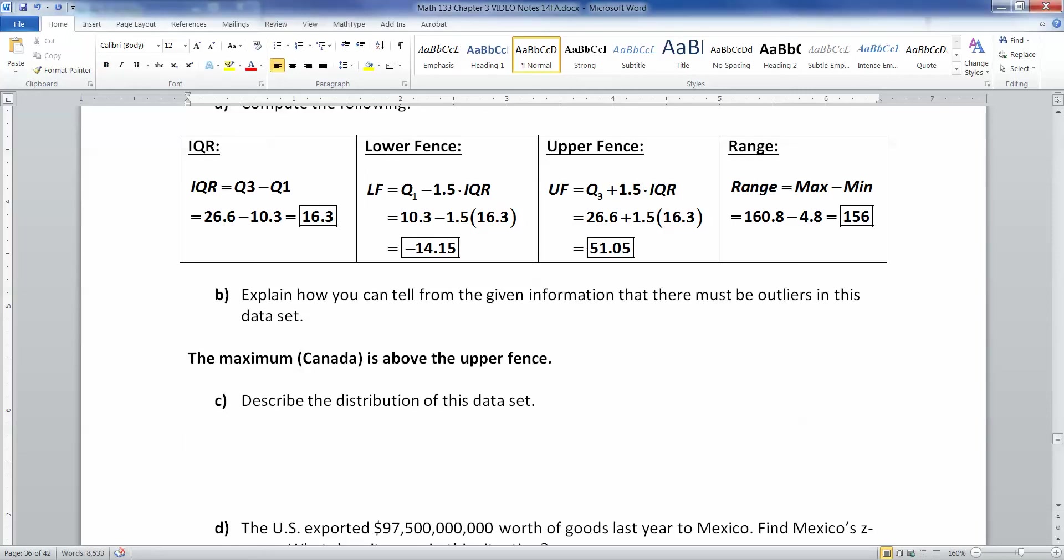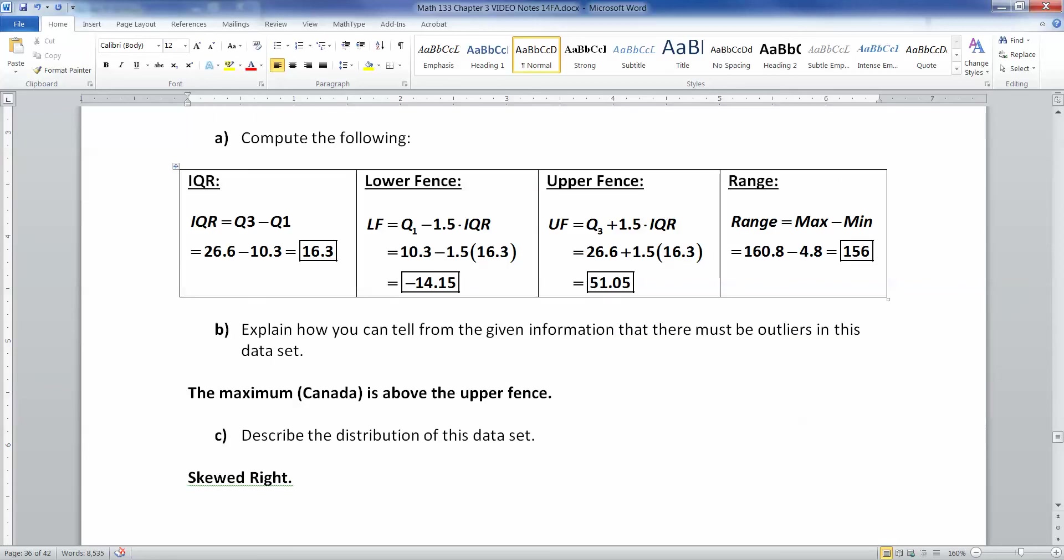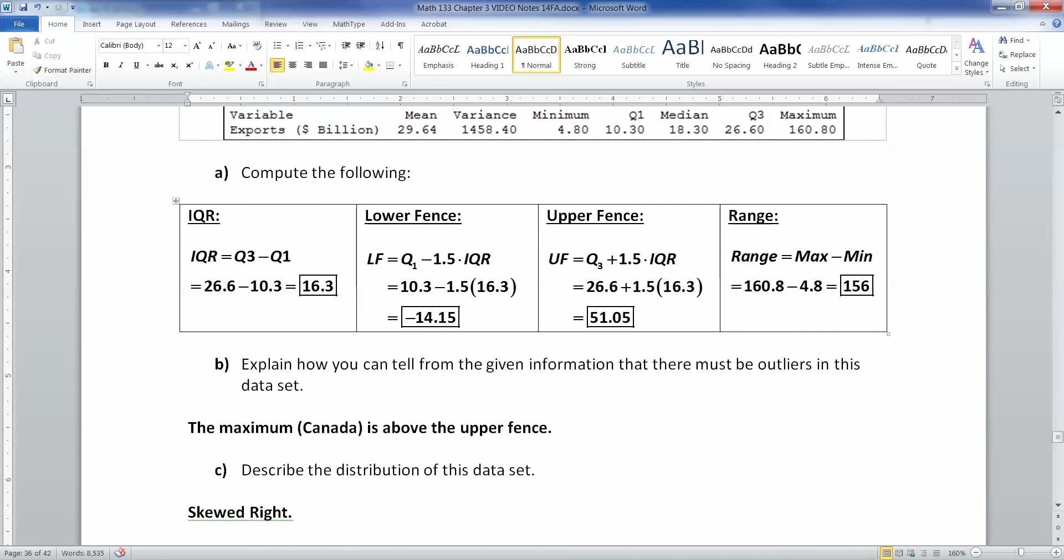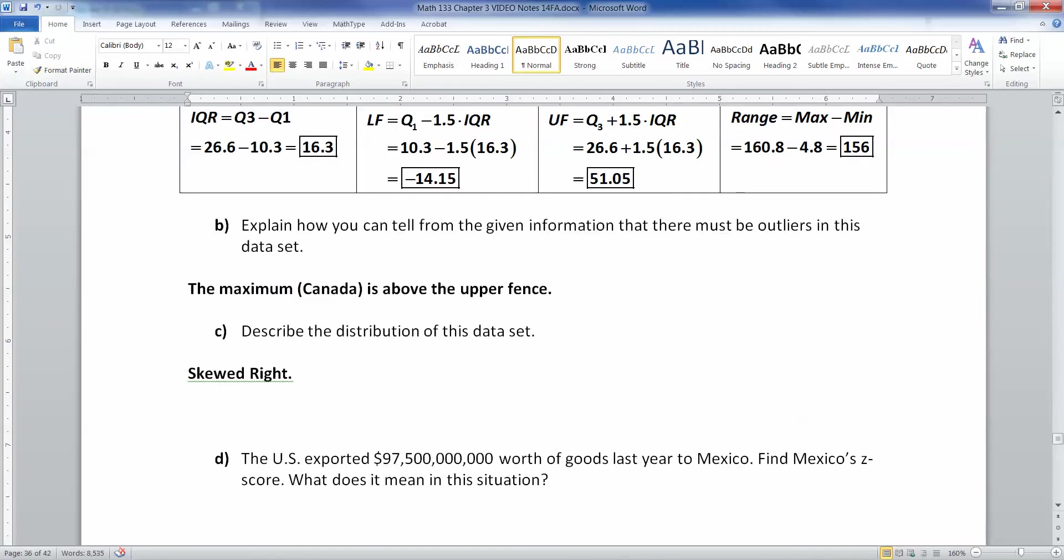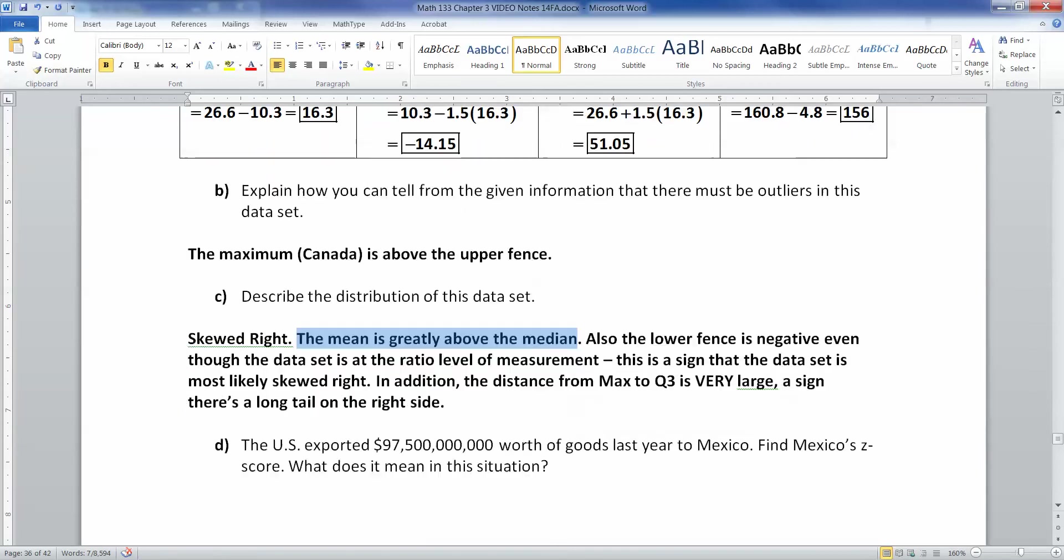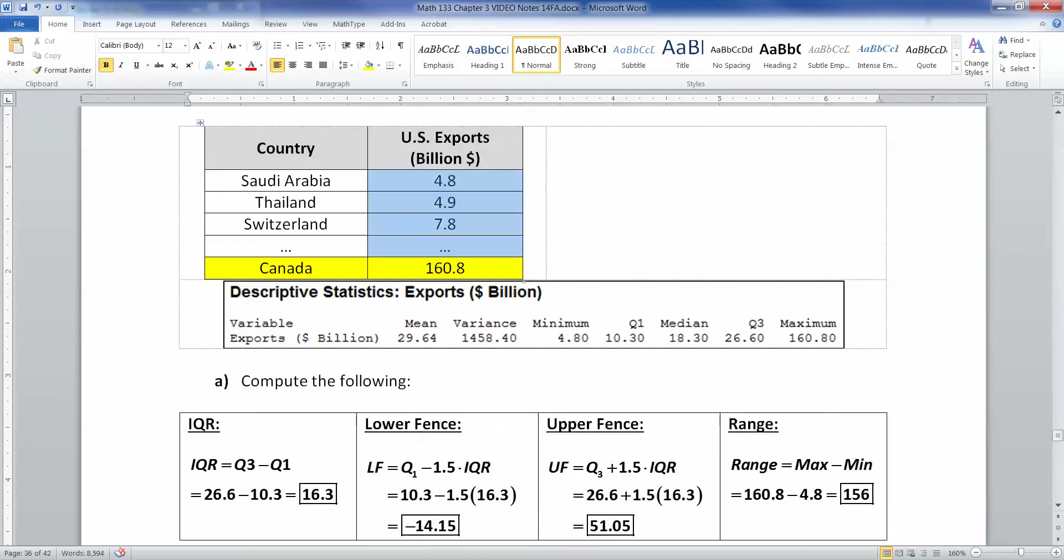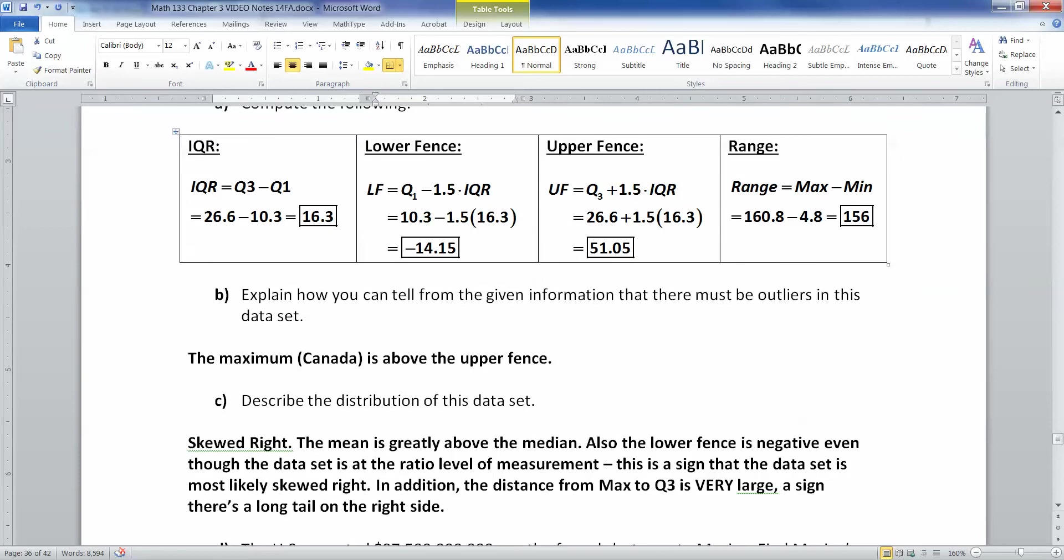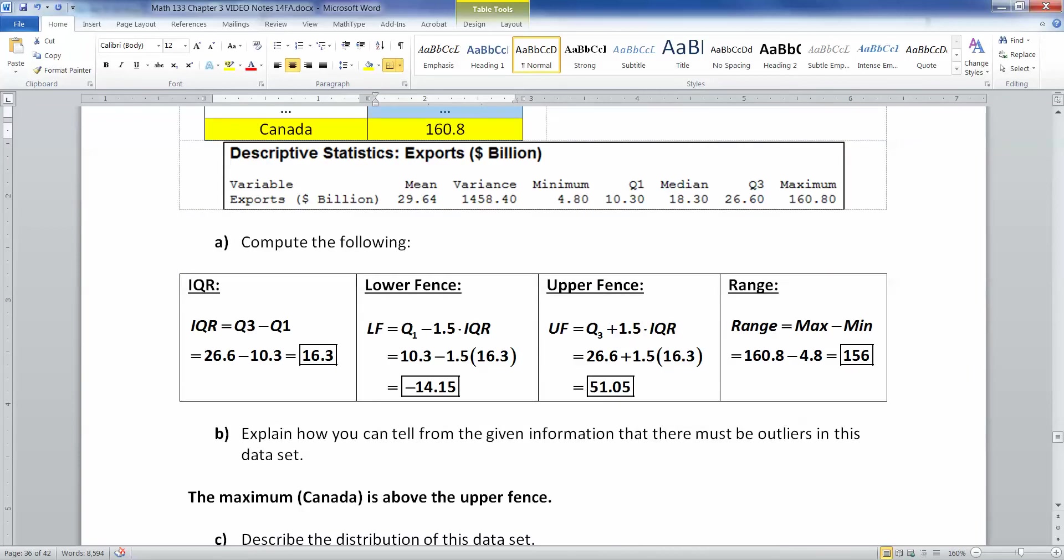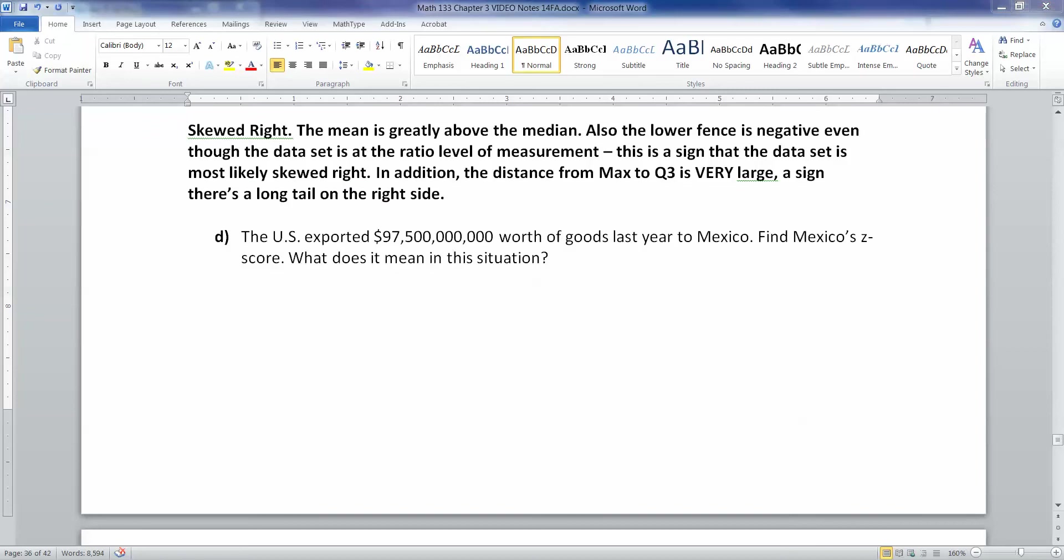Now, describe the distribution. This is definitely skewed right. You can tell it from a variety of reasons, one of which is that the mean is much larger than the median. For another thing, the lower fence is negative, which is usually a sign, right? That this is skewed right. All right, so we learned back earlier in Section 3.1 that the mean is greater than the median means it's skewed right. Also, the fact that the lower fence is negative, even though this data set is at a ratio level. You can't have negative exports, but our lower fence is negative. That's usually a sign. Also, if you look at the distance between Q3 and your maximum, see how huge a distance that would be? It's like 140 wide. That's very large. It means that there's a very long tail on that right-hand side.